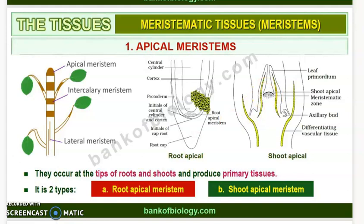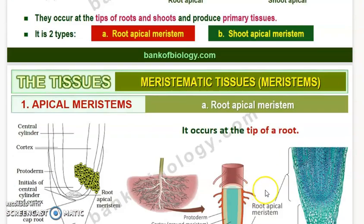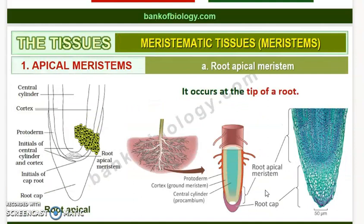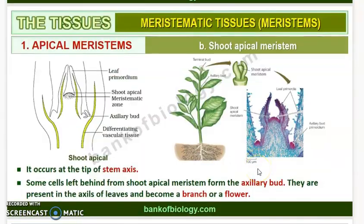There are two types of apical meristem: root apical meristem and shoot apical meristem. Root apical meristem is present at the tip of the root, and shoot apical meristem occurs at the tip of the stem axis — the most distal region of the stem. You can see this in the diagram provided.